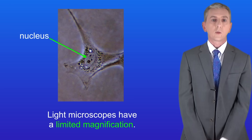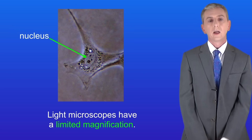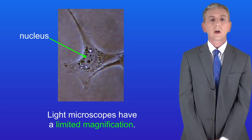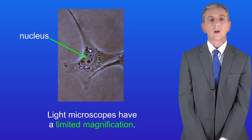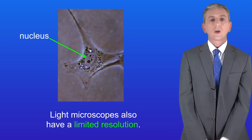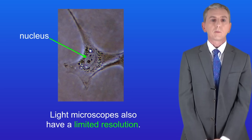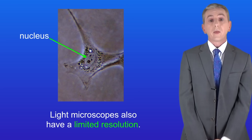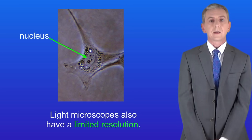Firstly, light microscopes have a limited magnification. So for example we could not easily view structures inside the nucleus with a light microscope because the magnification is not powerful enough. Light microscopes have another big problem which is that they have limited resolution. What this means is that the image is blurred. Even if we could increase the magnification we'd still get a blurred image and we'd not be able to see fine detail, because the resolution is limited.